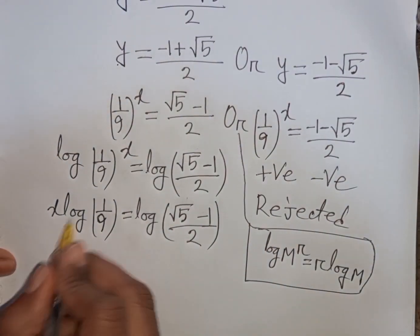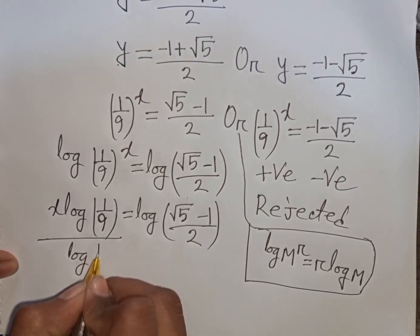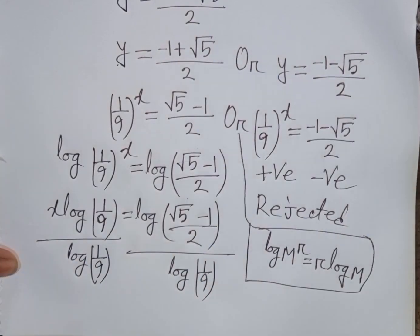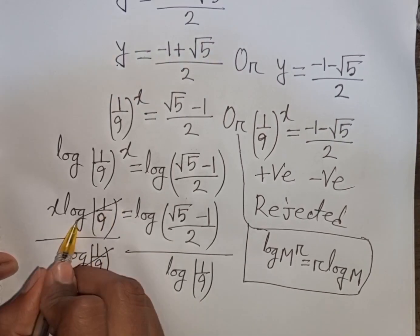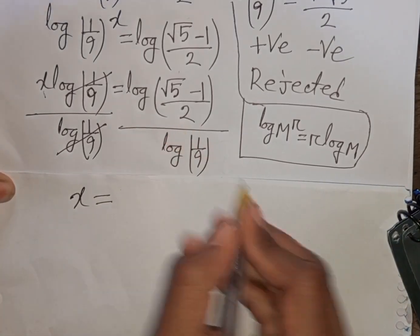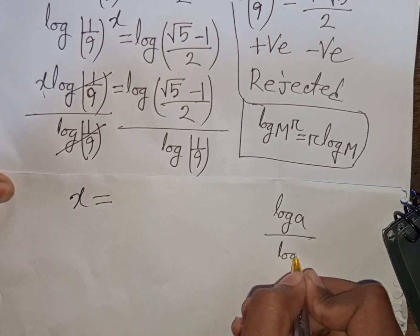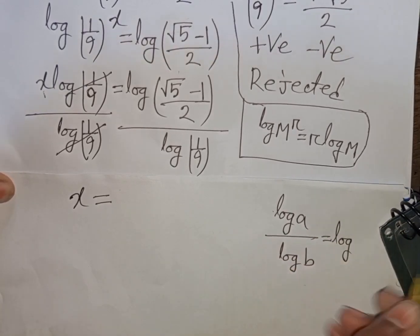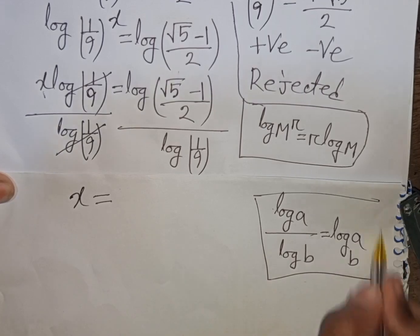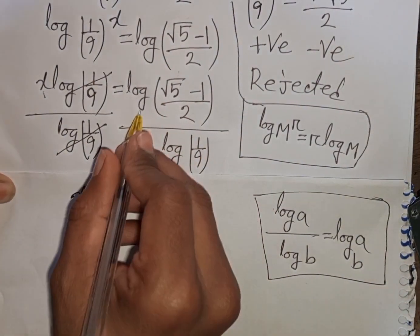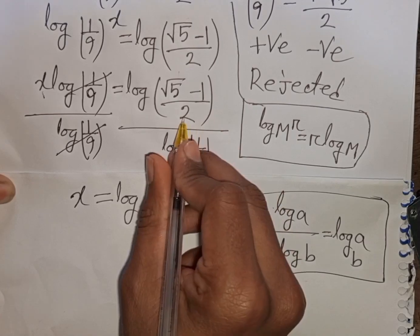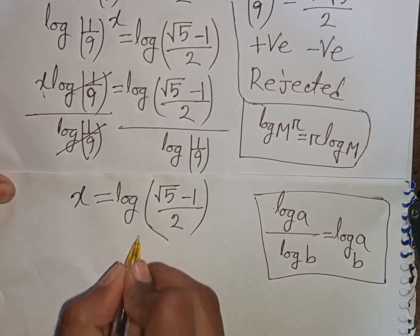We need the value of x, so divide both sides by log(1/9). The log(1/9) terms cancel. Using the change-of-base formula log(a)/log(b) = log_b(a), we get x = log base (1/9) of [(√5 − 1)/2]. This is our final answer.